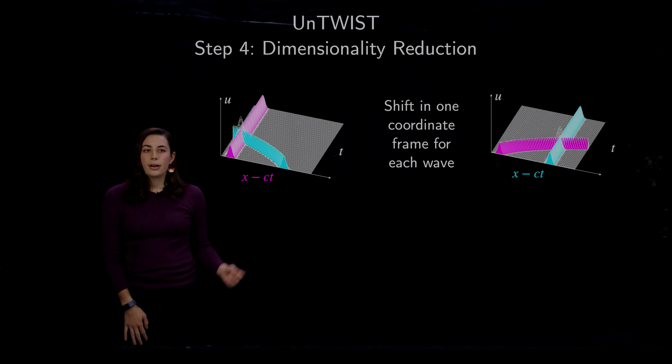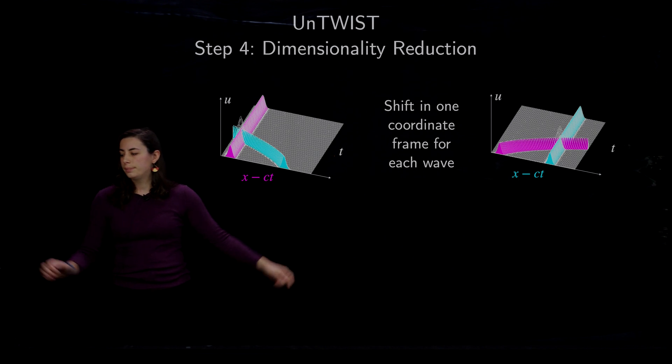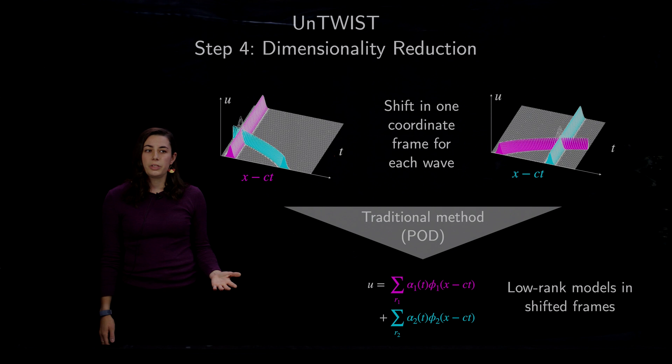So after we've found our functions, X minus C, T that describe our wave speed, we can shift our original data into coordinate frames that correspond to each of those wave speeds. And now we can use our traditional methods such as POD to decompose these into low rank shifted frames.